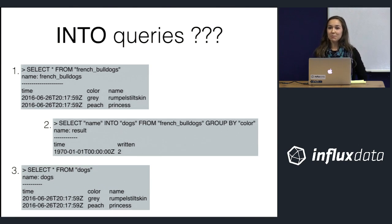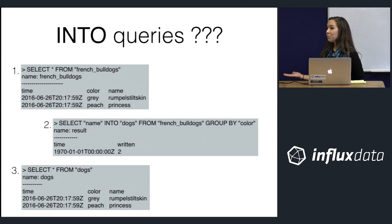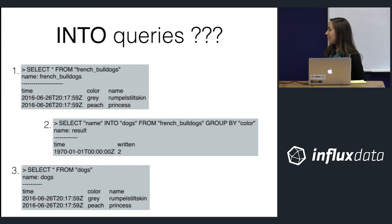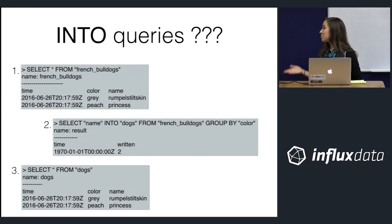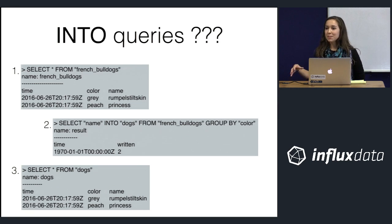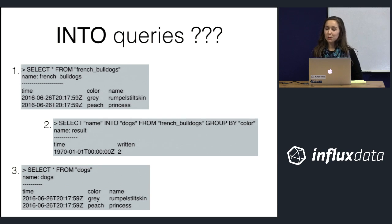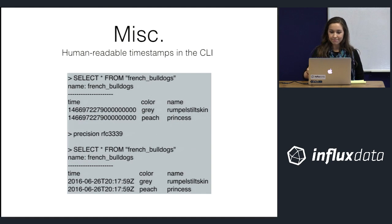The fix is straightforward: put any tag you want to preserve as a tag in the GROUP BY clause. I moved 'color' from the SELECT area into the GROUP BY clause, and now InfluxDB confirms two points were written and you have two points in 'dogs'. If you always want to preserve all tags, just put GROUP BY * in all your INTO queries and you won't have to worry about it.